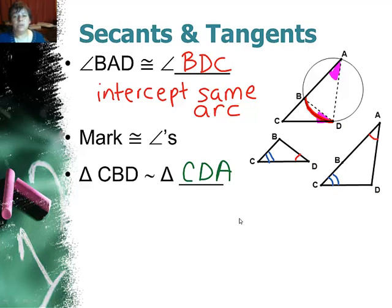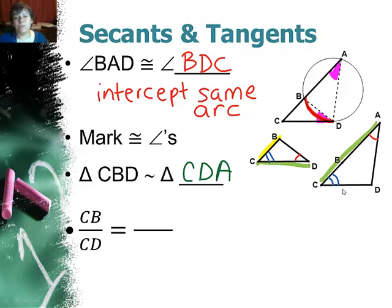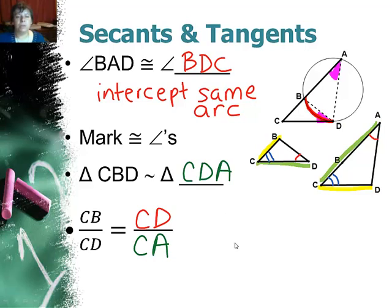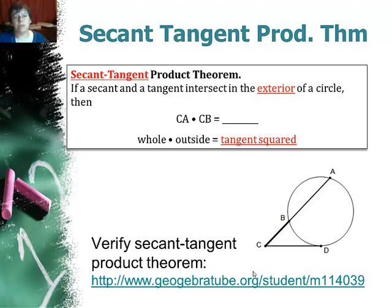Setting up a proportion: CB is to CD as CD is to CA. Cross-multiplying gives CB times CA equals CD times CD, or CD squared. This leads to the secant-tangent product theorem: if a secant and a tangent intersect in the exterior of a circle, then the whole times the outside equals the tangent squared. Make sure it's whole times outside — that's the main thing.